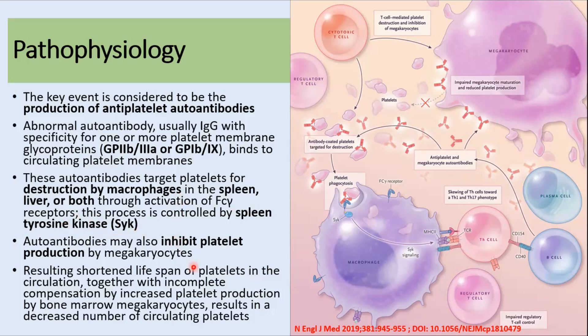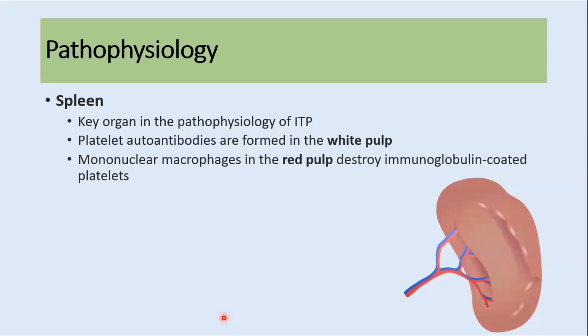In addition, autoantibodies may also inhibit platelet production by megakaryocytes. This results in a shortened lifespan of platelets in the circulation and incomplete compensation by increased platelet production by bone marrow megakaryocytes, resulting in a decreased number of circulating platelets leading to immune thrombocytopenia.